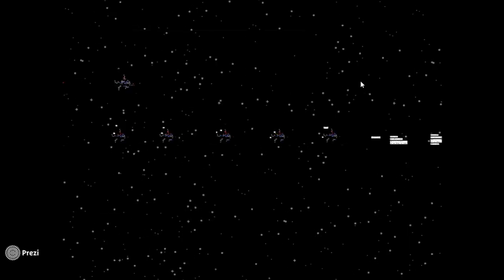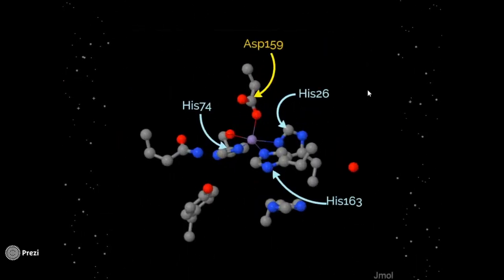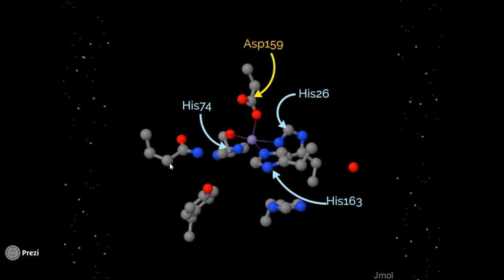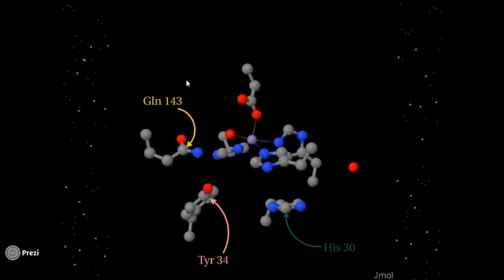Well, maybe the adept viewers have noticed the residues in the active site I haven't mentioned yet. What's happening is a chain of hydrogen bonds between aspartate-159, the hydroxide ligand, glutamine-143, tyrosine-34, histamine-30, and another water molecule in solution. Their interactions look like this.